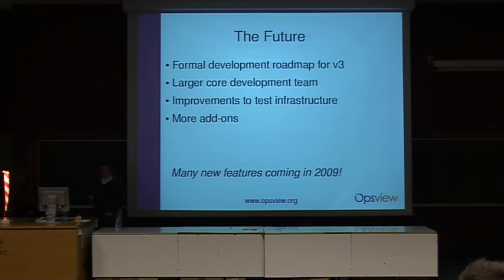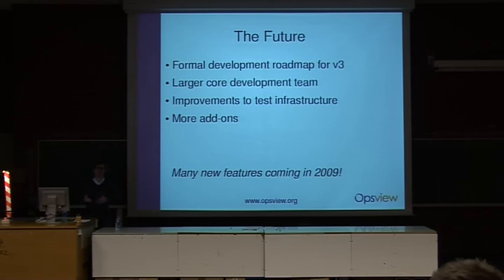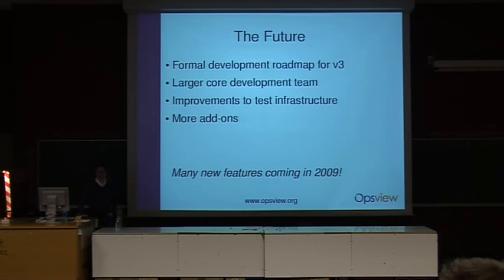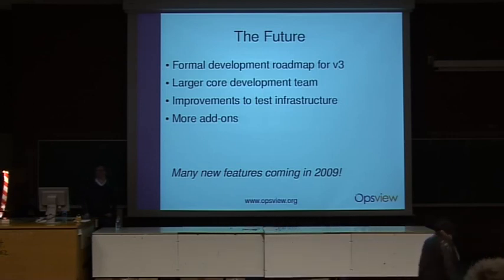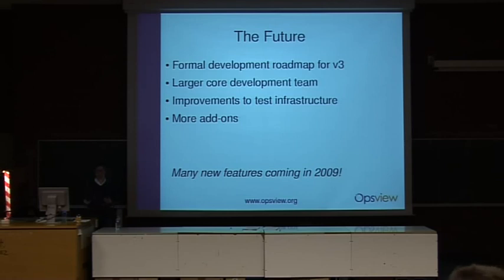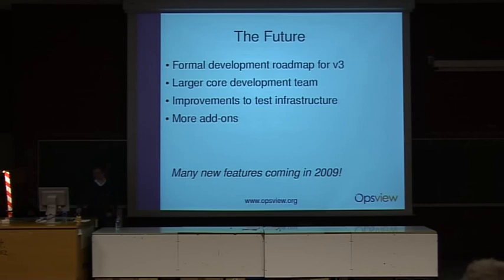In terms of the future for OpsView version 3, we've developed a much more formal process for putting a roadmap in place. We've got a roadmap covering the next 12 months and know pretty much what we're going to develop. We have a larger core development team and I expect that to get bigger as well. We've been improving our test infrastructure — developing code and making sure it's properly tested before releases. And there'll be more add-ons as well, including SMS gateways, help desk integration tools, and reporting tools that we expect to be more developed over the next year.